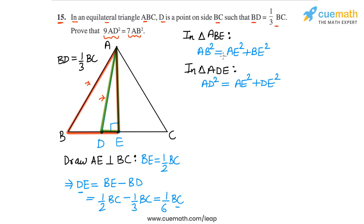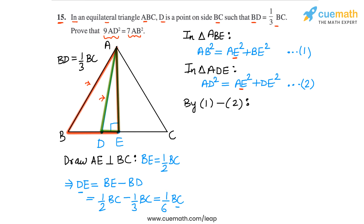Observing the right-hand sides of both equations, we have AE squared in each. If we subtract equation 2 from equation 1, we can eliminate AE squared. So doing equation 1 minus equation 2, the left-hand side gives AB squared minus AD squared, and the AE squared terms cancel, leaving BE squared minus DE squared on the right-hand side.